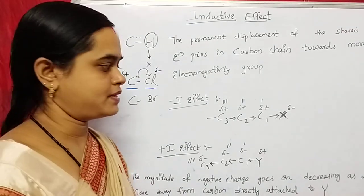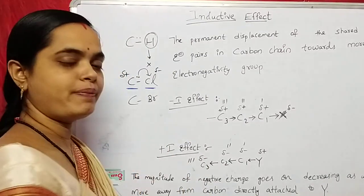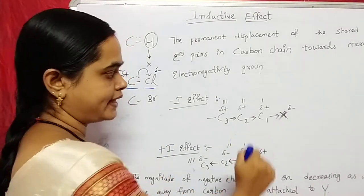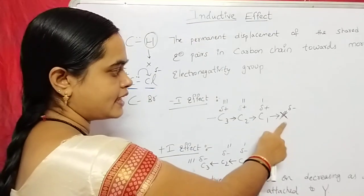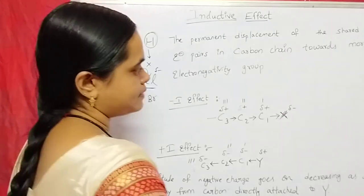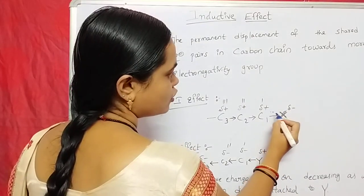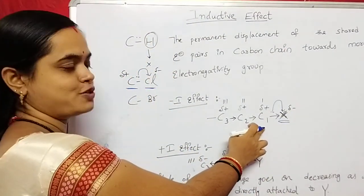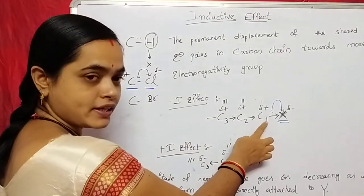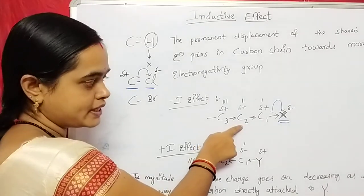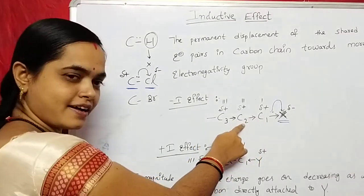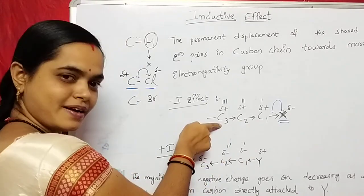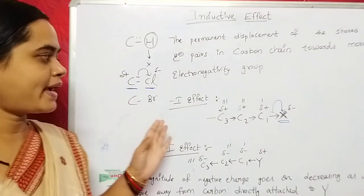This inductive effect also has two types. One is the minus I effect and the second one is the plus I effect. In the minus I effect, if an electronegative atom is attached to the carbon chain, this electronegative atom attracts the shared pair of electrons towards itself. So it gets a partial negative charge while carbon 1 gets a partial positive charge. And this carbon 1 also attracts electrons from C2 — but these electrons are shared between carbon 1 and carbon 2. Then the second carbon also attracts electrons from carbon 3, shared between carbon 2 and carbon 3. That is the minus I effect.